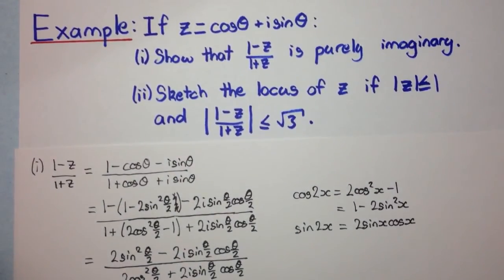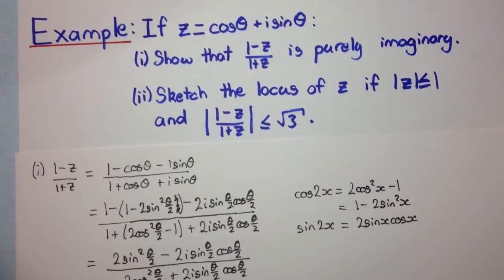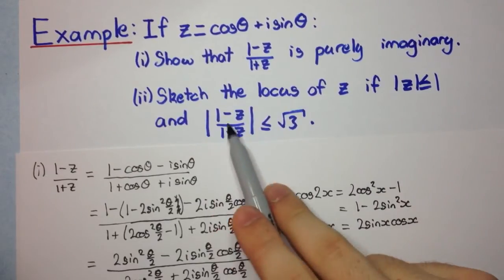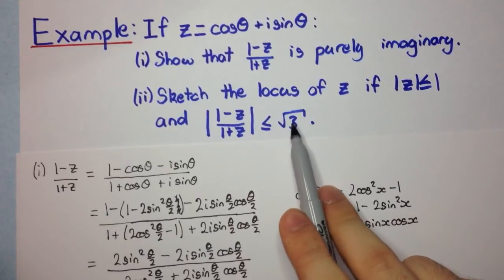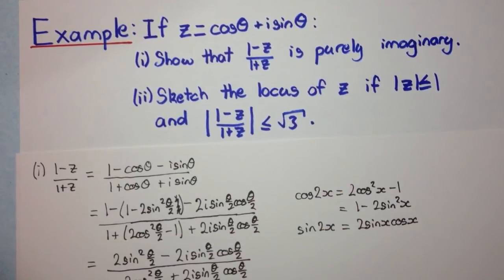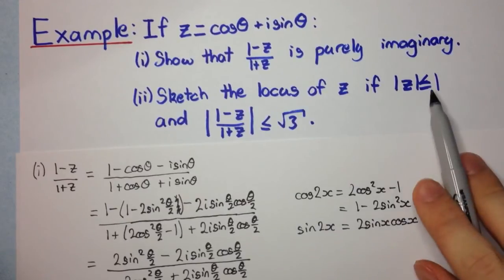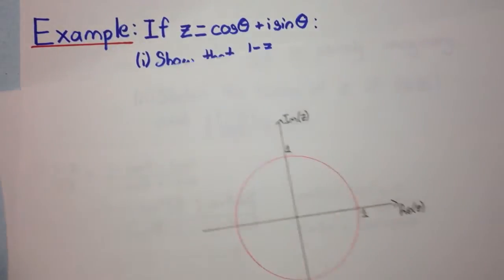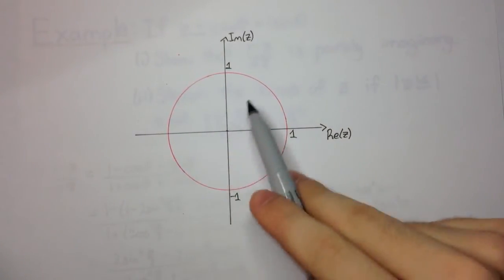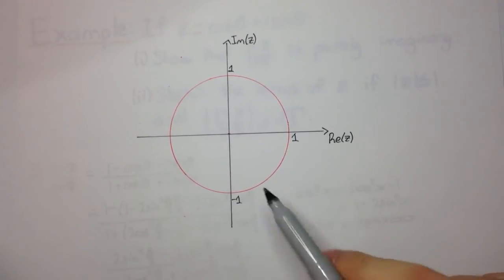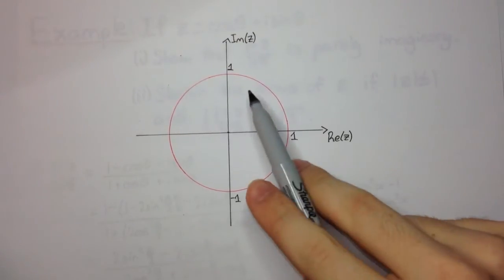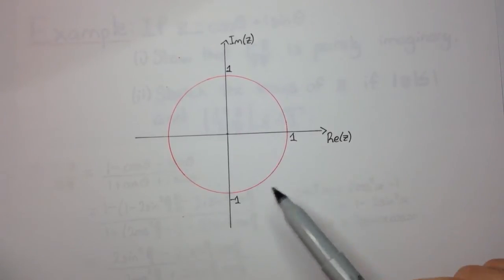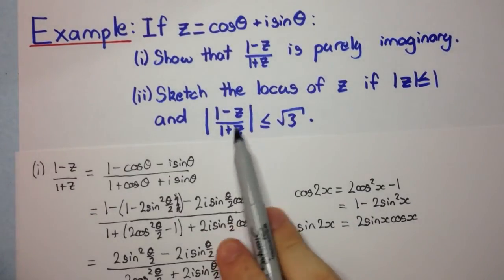Now for part 2: sketch the locus of z if the modulus of z is less than or equal to 1, and the modulus of (1 minus z)/(1 plus z) is less than or equal to root 3. We know that |z| ≤ 1 is the unit circle and all points inside it. I've already drawn that in. We want the intersection of these two loci, so I won't shade it yet.